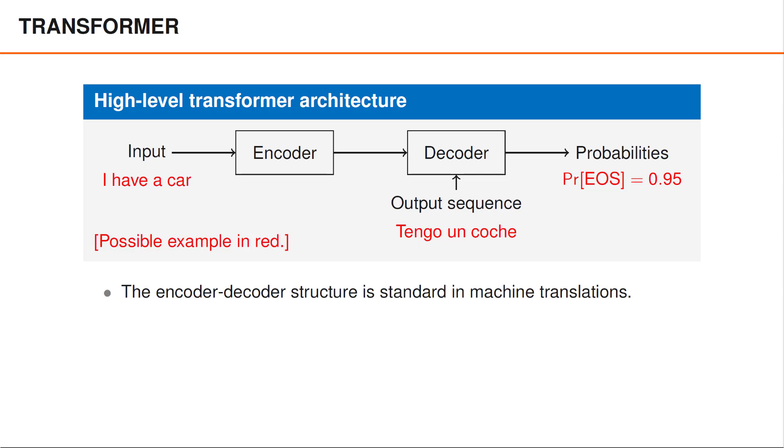We repeat this process until our model tells us to output the end of sequence token, here denoted EOS, after which our translation is complete.